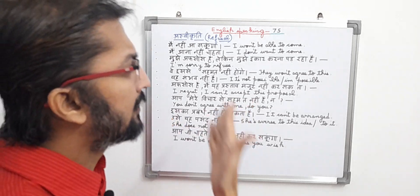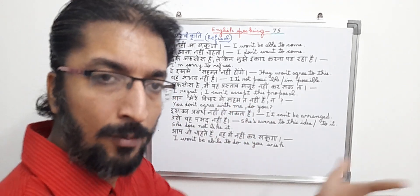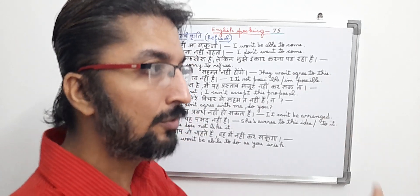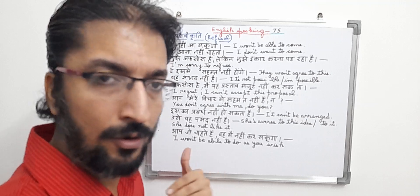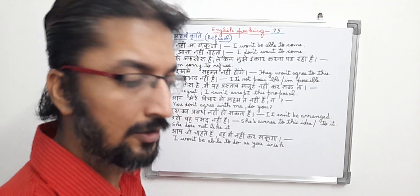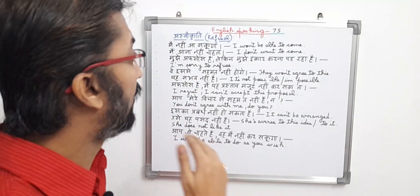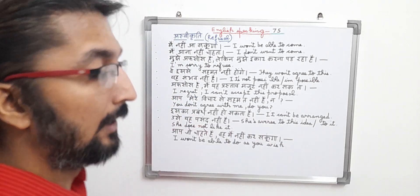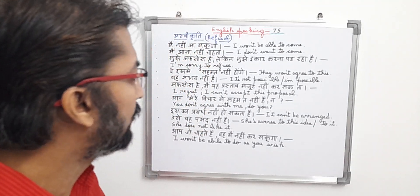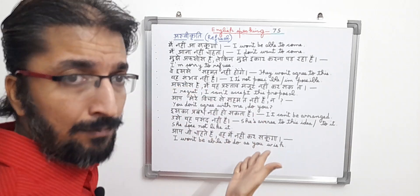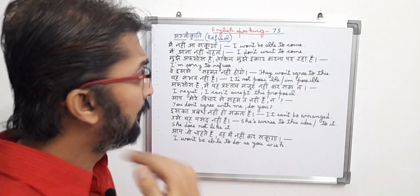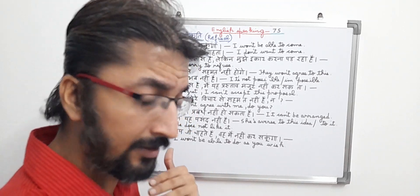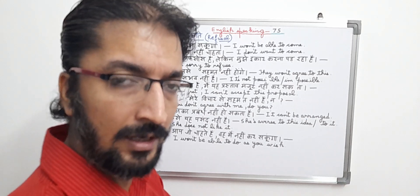So friends, this was English speaking part 75, in which I tried to explain aswikrati — meaning refusal type sentences. Refusal means that we clearly refuse to do anything when someone asks us to do something and we are not in a mood to do it. I wrote the sentences in Hindi and translated them into English so it becomes easier to understand refusal type sentences. Refusal type sentences are normally used in daily life when we clearly refuse to do anything for others — for family members, friends, relatives, neighbors, etc.